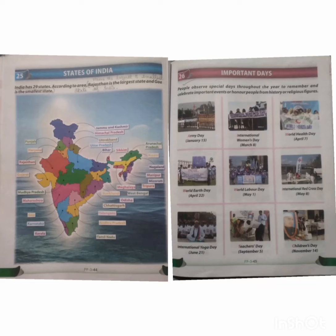Next is chapter 26, that is Important Days. There are many important days which we observe. See page number 45. People observe special days throughout the year to remember and celebrate important events, or to honor people from history or religious figures.